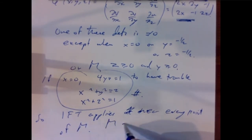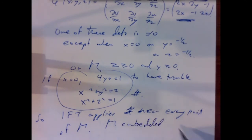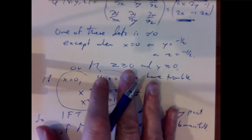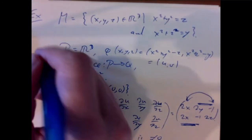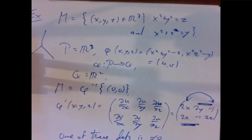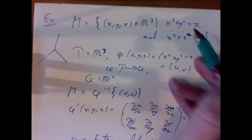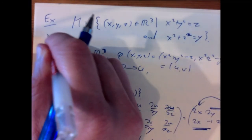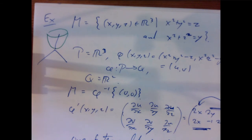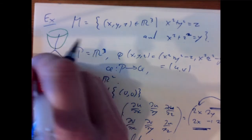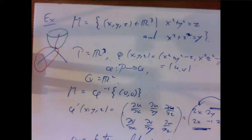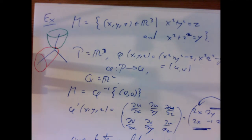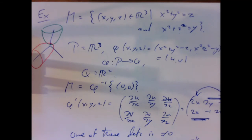In three-dimensional space we have a paraboloid z = x²+y² and another paraboloid y = x²+z² going out along the y-axis. M is the intersection of those two paraboloids. It's not immediately clear what that looks like, but according to this argument, it is a smooth curve.